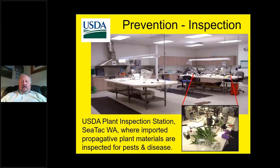Another method of prevention has to do with inspection of live plants. Live plants in their various forms — whether seeds, cuttings, etc. — can certainly bring pests with them. Imported propagated materials are inspected for pests and diseases across the United States near ports of entry. There are 17 or 18 what are called plant inspection stations that USDA has, whose primary function is the inspection of live plants and plant parts for pests.